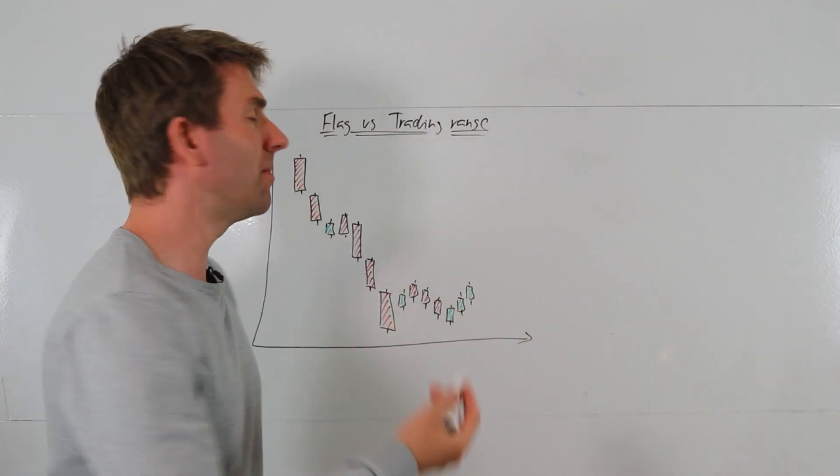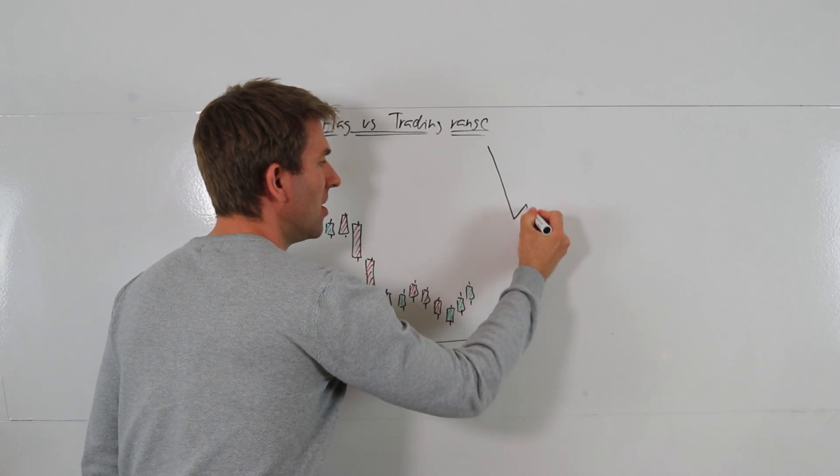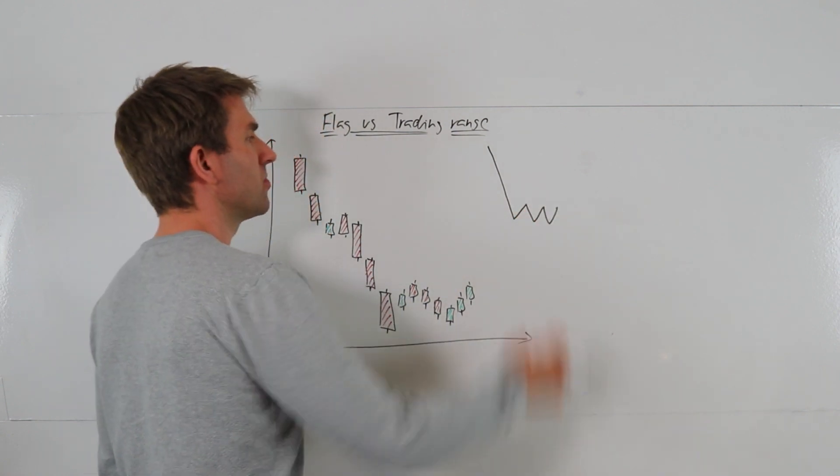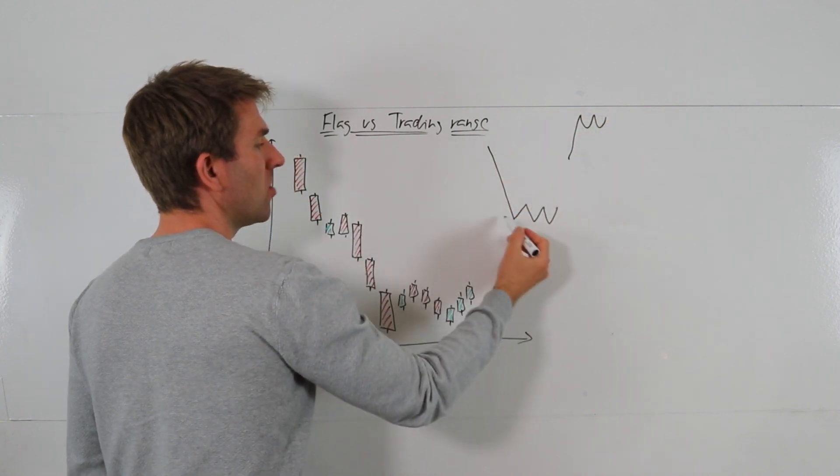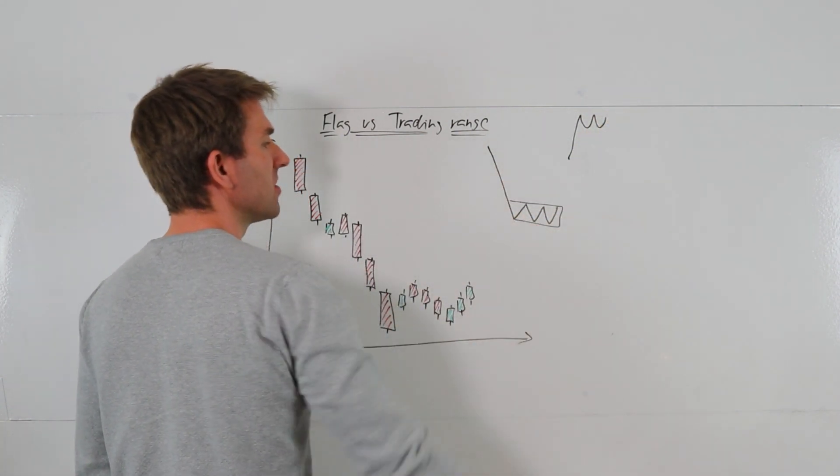So a classical bear flag, if we drew a textbook style, would be this. We've all seen in textbooks there's our pole. It's just the opposite of a bull flag which is this way around. There's our pole and there's our flag, and the reason it's called a flag obviously is because of this.